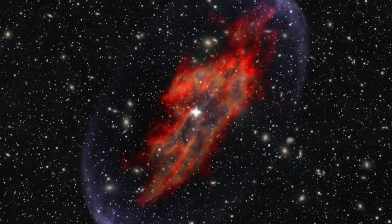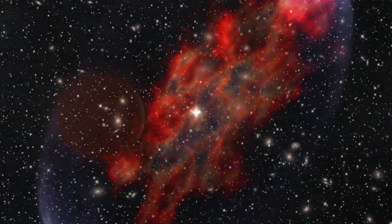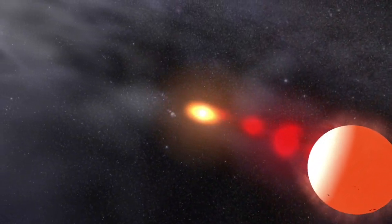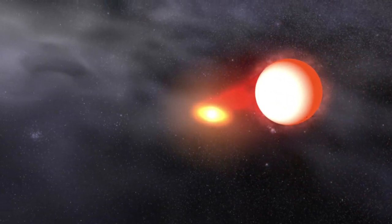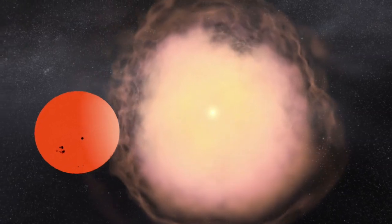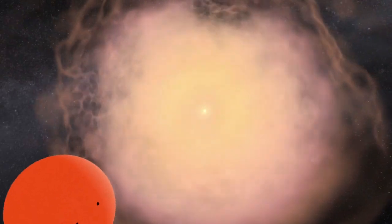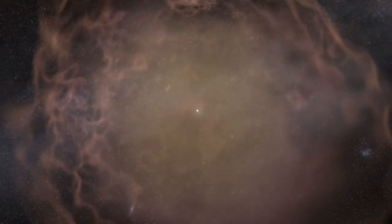Type Ia supernovas are nature's most productive foundries. An old white dwarf star pulls gas off its giant neighbor. The dwarf gains mass until it becomes unstable and blows itself to bits. The explosion creates vast amounts of heavy elements and blasts them into space.